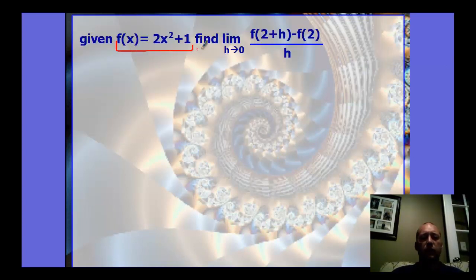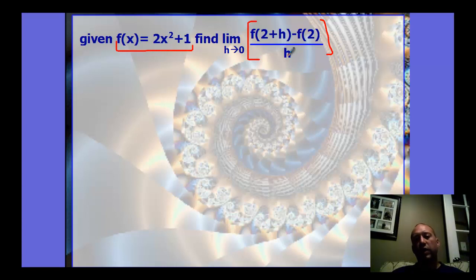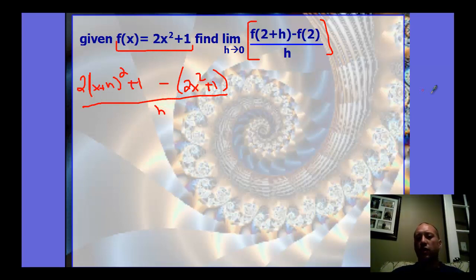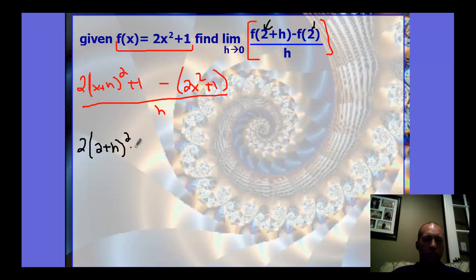Given the function f of x, let's find the limit as h approaches zero of this difference quotient. We have to find the difference quotient first, then substitute for the limit. We can't put h equal to zero right away — we'll always get zero in the denominator. Our function is two times x plus h squared plus one, minus f of x which is two x squared plus one, all over h. In this problem we know x is two, so we replace x with two: it's two plus h, quantity squared.